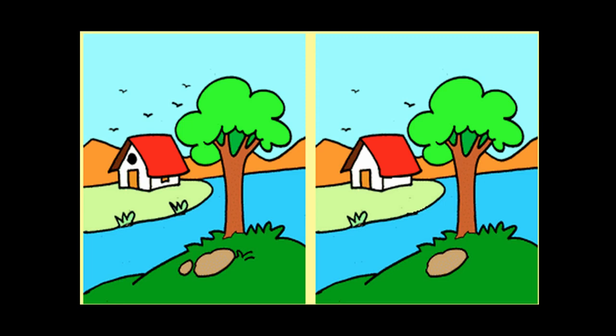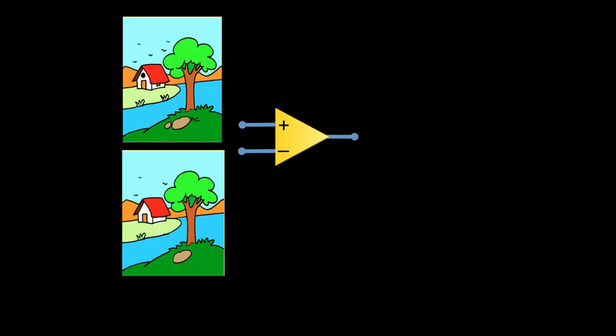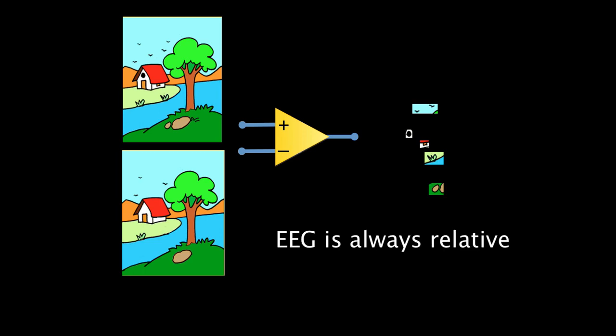Another way to think about this is the children's game seen on restaurant menus — a spot-the-difference puzzle. The picture on the left and the picture on the right are very similar, except for a few small differences. If we consider the picture on the left as input 1 and the picture on the right as input 2, we could put these two signals through a differential amplifier, and the output would show only the differences. This is a good way of thinking about EEG signals as something that is not absolute, but rather the difference between two inputs.